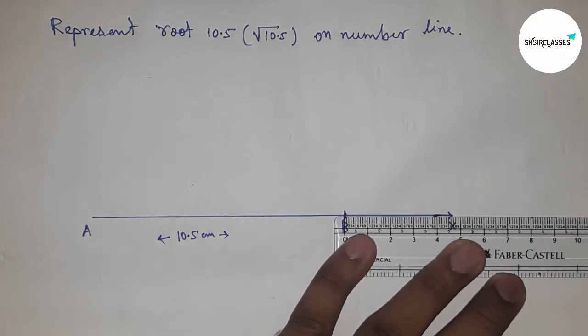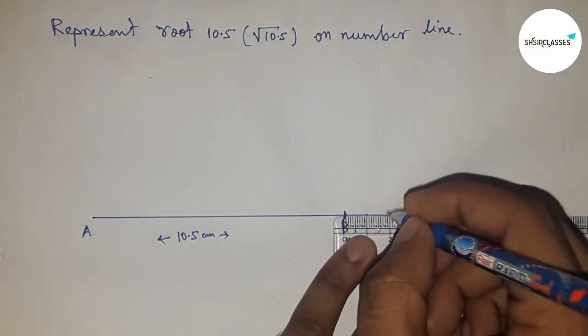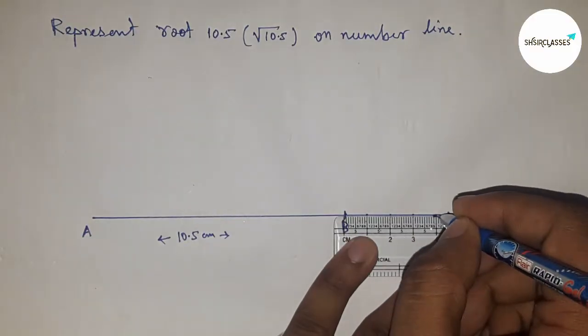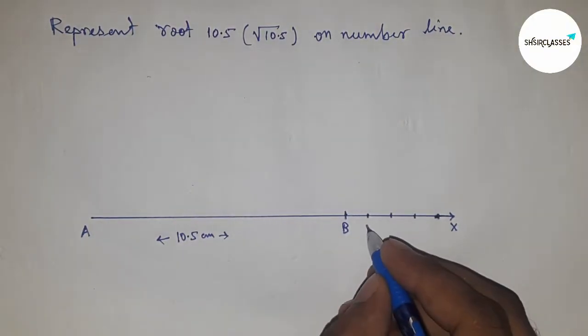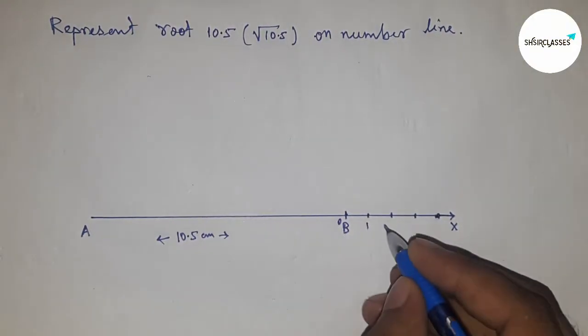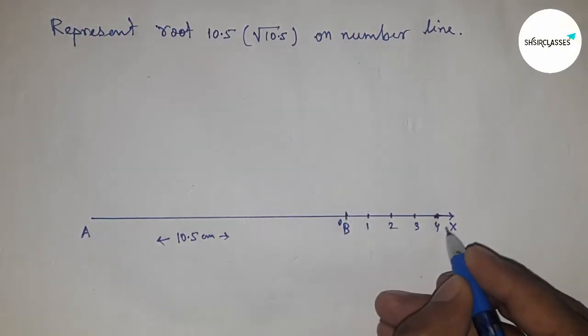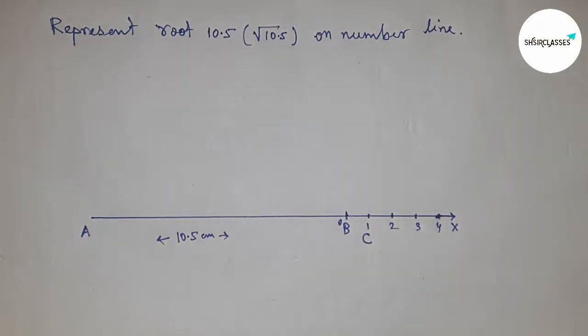Mark the numbers on the line from B to X. This is 0, 1, 2, 3, 4, and so on. This is point C. Next, we have to bisect the line AC.